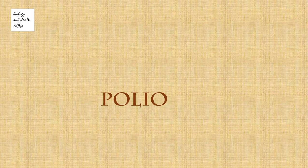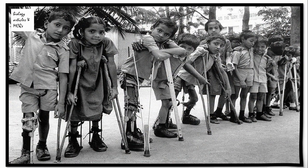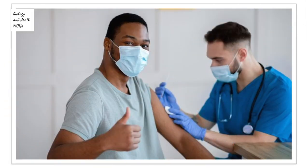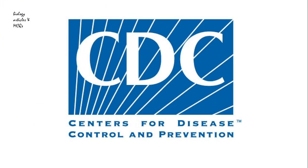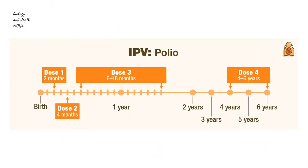The next commonly used vaccine is IPV, used for the polio virus. Polio is a virus that paralyzes one in two hundred people who get infected, and there is no cure once paralysis sets in. The CDC recommends children get four doses at the following ages: two months, four months, six to eighteen months, and four to six years old.